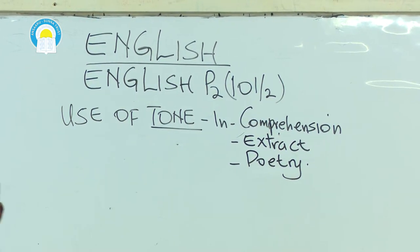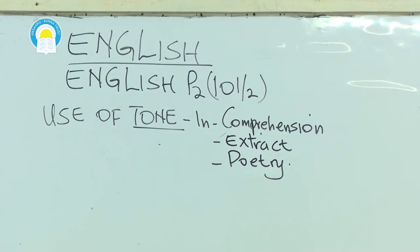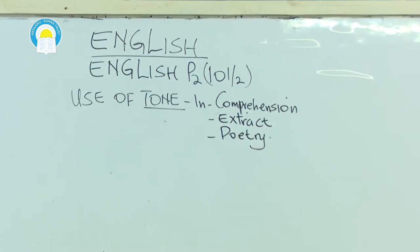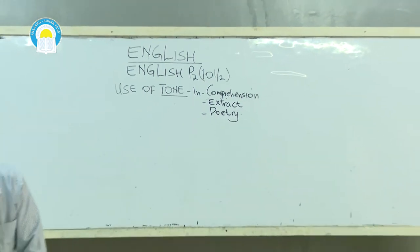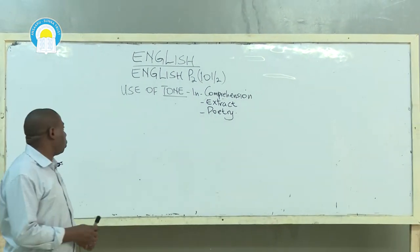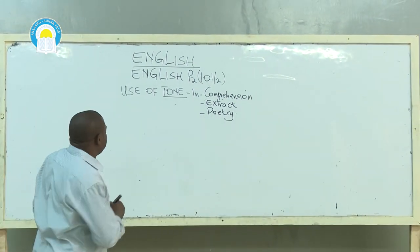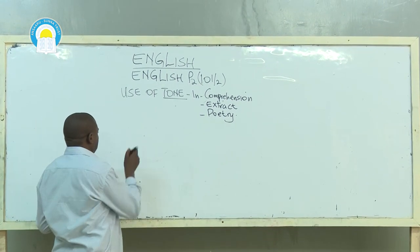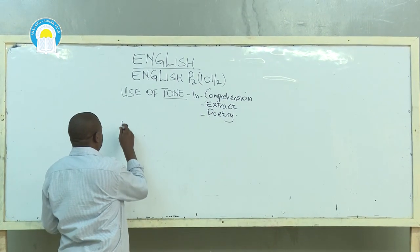We are talking about around nine marks out of the possible 80 marks in English Paper Two, and that is why we cannot afford to ignore this particular concept. The framing of the question is normally the same, and we want to look at the definition of tone.